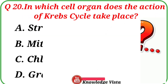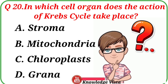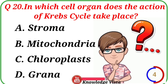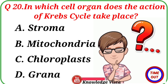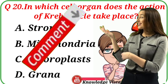Question No. 20: In which cell organ does the action of the Krebs cycle take place? Your options are: A. Stroma, B. Mitochondria, C. Chloroplasts, D. Grana. Write the correct answer in the comment box.